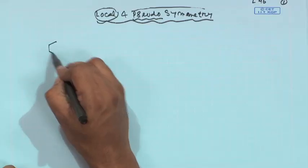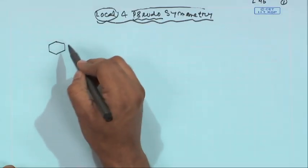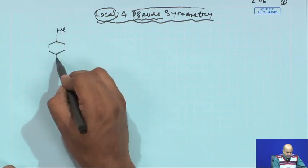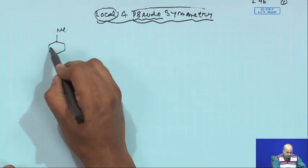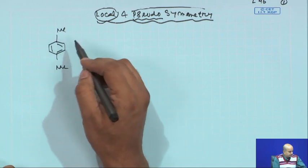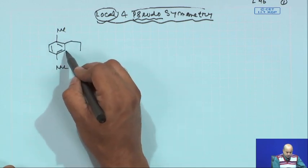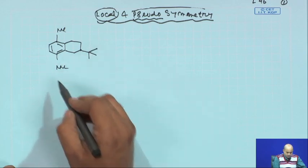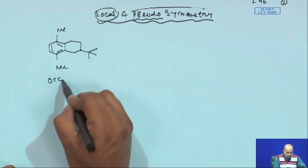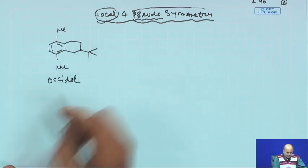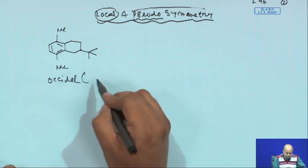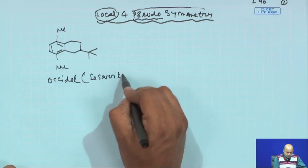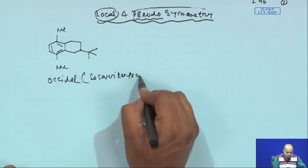The next target or next problem: we will try to analyze this similar concept for a natural product whose name is Ocidol. This molecule is a terpene — specifically a sesquiterpene — having a C15 framework.